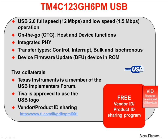The USB port on the TM4C123GH6PM is USB 2.0 compliant at 12Mbps full speed operation. It can also operate in low speed mode, which is 1.5Mbps. The device has an integrated PHY or physical interface so that the hardware connection to the USB port is very simple. All the normal transfer types are supported: control, interrupt, bulk, and isochronous.